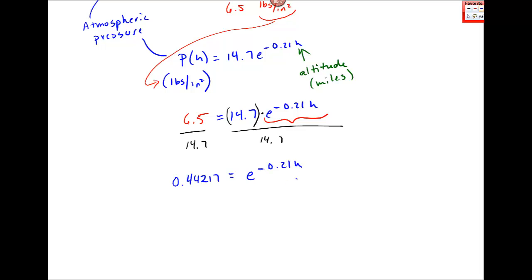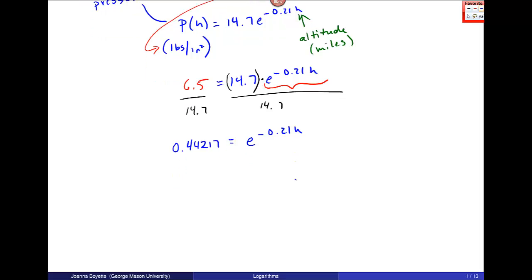Now I can either take the log of both sides or convert to a log equation. If you do it as a conversion, you get natural log of 0.44217 equals negative 0.21h. And then divide both sides - I'm trying to solve for h, right? - so divide both sides by this negative 0.21.